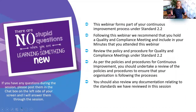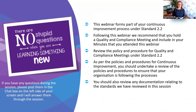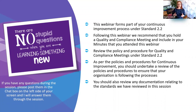As per usual, this webinar forms part of the continuous improvement process under Standard 2.2. Following this webinar you should review the policies and procedures that relate to these standards and update those if required, or realign your practices in line with them. You should table this at your next Quality and Compliance meeting — noting that you attended the training and what you learned, and whether anything needs to change within your practices.